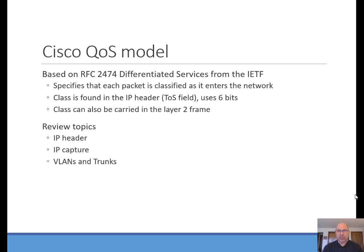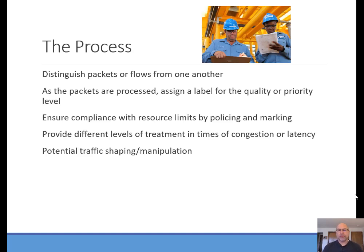To prepare for understanding everything we're about to discuss, make sure you understand the IP header, what happens on the wire when you capture traffic, VLANs and trunks, and specifically 802.1Q. The basic process: you've got many different kinds of packets, and you differentiate them based on flow or type of traffic. Voice over IP has a particular look, protocols, and requirements — completely different from something like email. You assign a label, create a treatment for packets with that label, and then act on it.